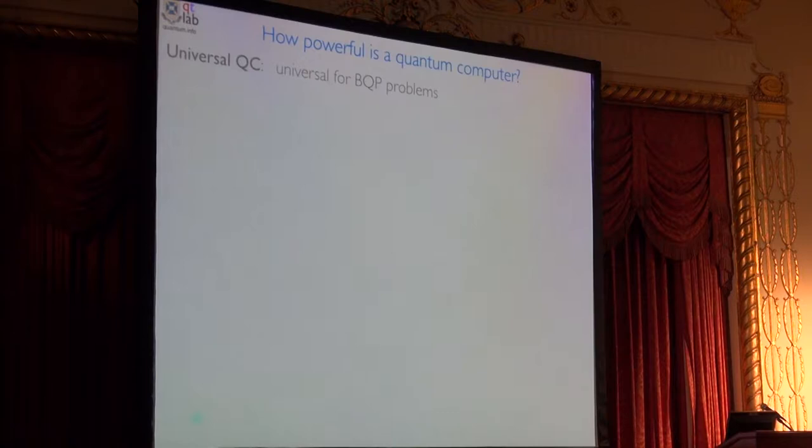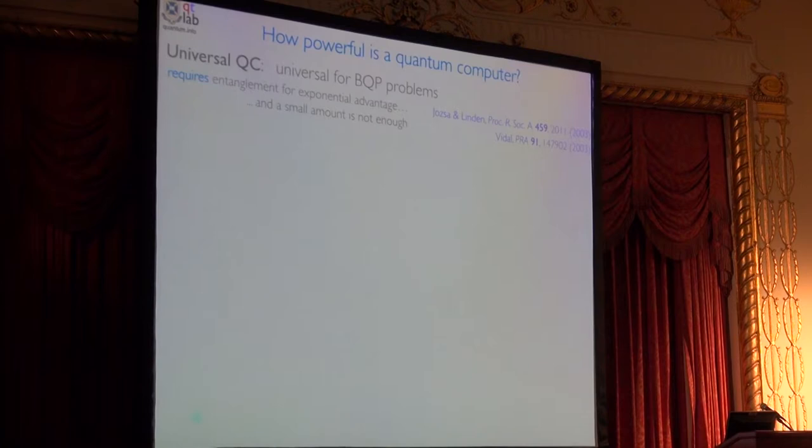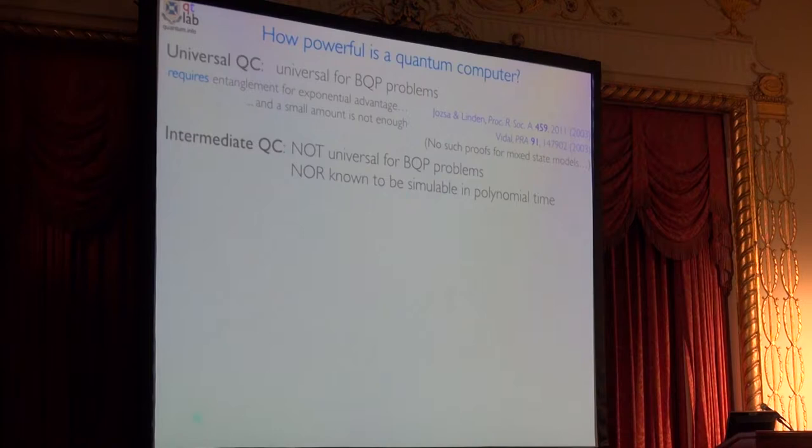A universal quantum computer is defined as something that's universal for a class of problems, BQP, bounded quantum polynomials. It's been known for about 10 years that you need entanglement, more than 10 years, to solve these things. And it's also been known that a small amount of entanglement is not enough. It's got to grow in a certain size with the instance that you're trying to solve. In fact, more recently, it's known that too much entanglement is a problem. It's quite a narrow path you're trying to hit. Pardon me. But there are no such proofs for mixed states. And that has led to a new class of quantum computers, something called intermediate quantum computers.